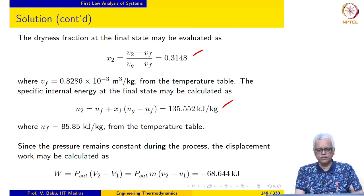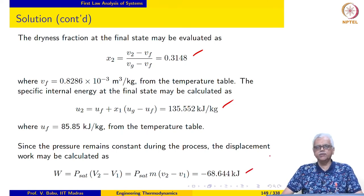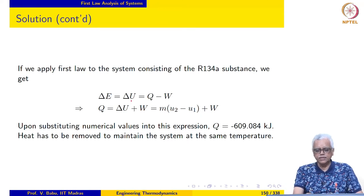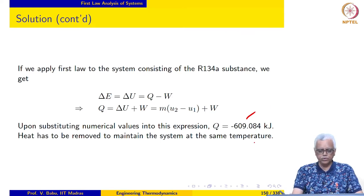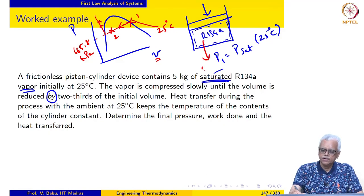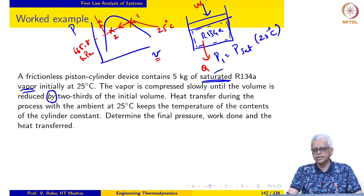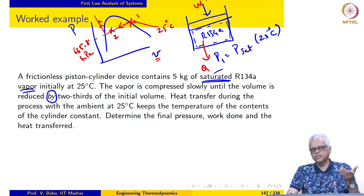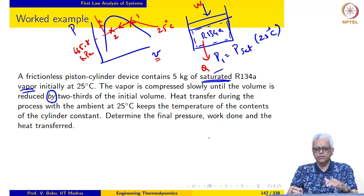We can calculate the displacement work — there is no other form of work. Displacement work is P delta V and the pressure remains constant, so we may evaluate the work interaction as minus 68.644 kilojoules. Clearly, work is being done on the system. Applying the first law, delta E equals delta U equals Q minus W. We rearrange and get Q to be minus 609.084 kilojoules. As we do work on the system and compress it, heat is being lost to the surroundings. The temperature of the R134A remains constant because it is undergoing a phase change, and the pressure also remains constant during this phase.